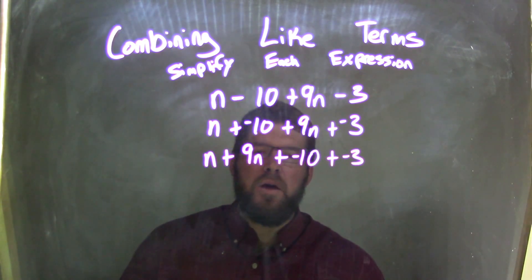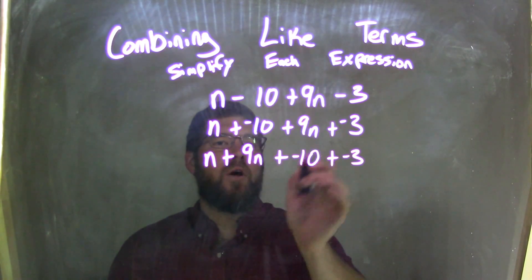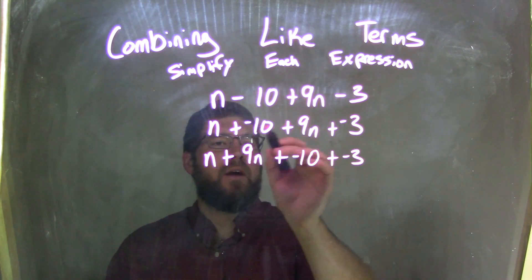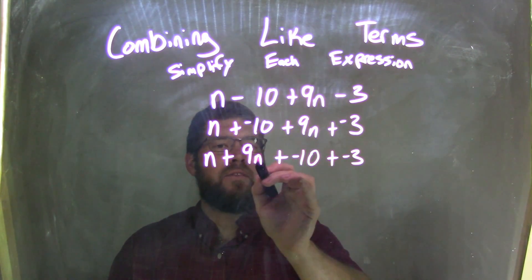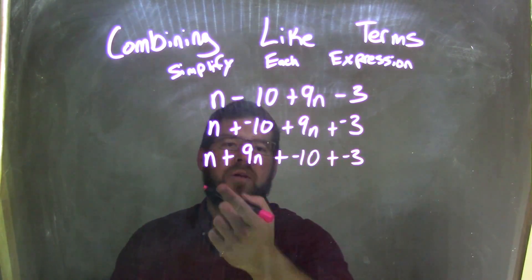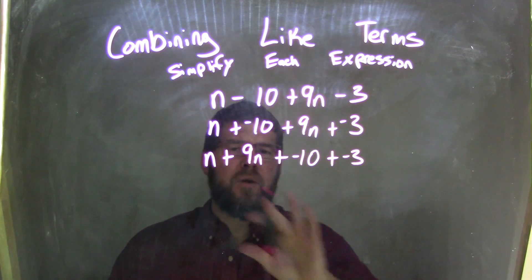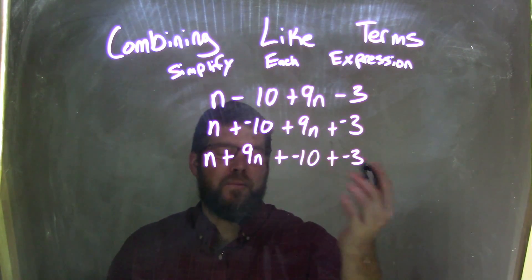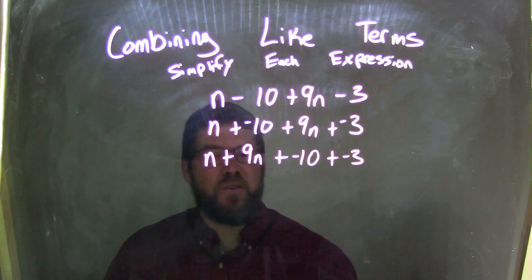Okay? So let's double check really quickly. Do we have all parts here? Yes, we have the n, it's right there, the negative 10's here, the 9n's there, the negative 3's here, and they're all addition. And so by the commutative property, the reason why we're rearranging it is because of the commutative property.